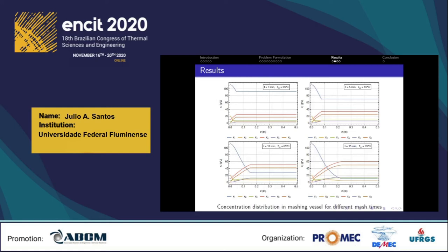Here we can see the results of the mathematical model. The figure presents the concentration distribution in the mash vessel for different mash times. In initial mash times, the concentration of starch decreases almost uniformly throughout the vessel, as the production of carbohydrates resulting from the conversion of starch increases. However, near the vessel inlet, the concentration profile is different from the rest, due to unconverted wort being injected at z equals zero — the vessel inlet. As time evolves, the effect of the advection component becomes evident as the uniformly concentrated zone progresses towards the vessel outlet.